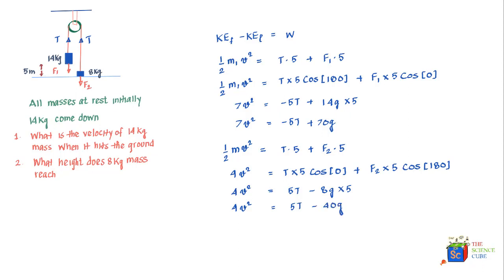We now have two equations. Adding equation 1 and equation 2: the 5T terms cancel, and on the left side we get 11v-squared. On the right side we get 70g minus 40g, which is 30g. Solving for v gives a velocity of 5.17 meters per second.